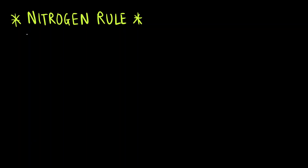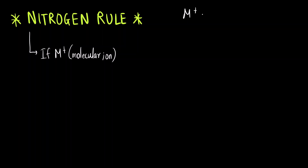The nitrogen rule is very simple. There are two cases. The first case involves the M+ value, that is the molecular ion peak. How do you calculate the molecular ion peak? You calculate it by finding out the molecular mass or molar mass — that is the same value as the molecular ion peak.